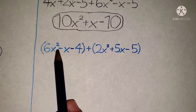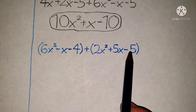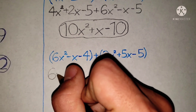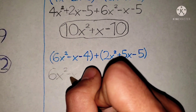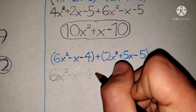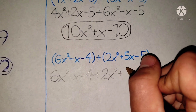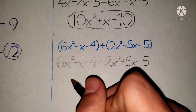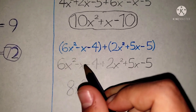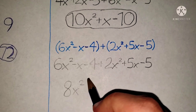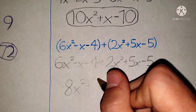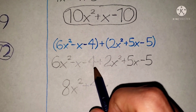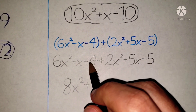One more question: 6x squared minus x minus 4, plus 2x squared plus 5x minus 5. I'll show you one more time. Remove the parentheses — 6x squared plus 2x squared is going to be 8x squared. And 5x minus x is going to be positive 4x. And negative 5 minus 4 is going to be negative 9.